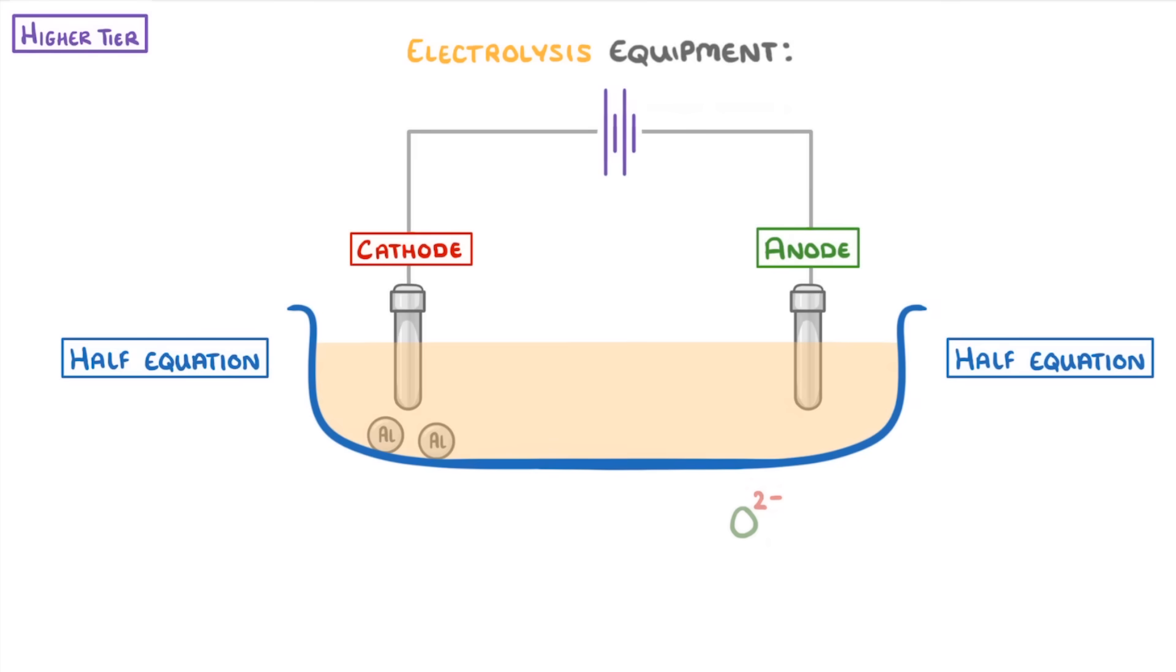At the anode, we have oxygen 2- ions, going to form oxygen atoms plus 2 electrons. However, since oxygen forms diatomic molecules, we're going to need 2 oxygen ions on the left, and so 4 electrons will be released in total.